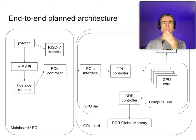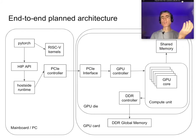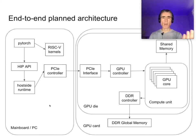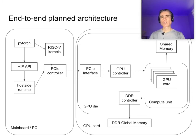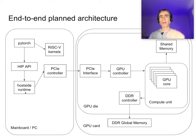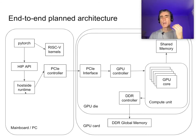Here is the end-to-end planned architecture. The screen is split into two halves. On the left-hand side we've got the main board — the PC, the main host computer. On the right-hand side we've got the GPU card, which comprises DDR global memory and the GPU die itself, which is the ASIC we're taping out. On the left we've got PyTorch, which communicates using a HIP API with our host-side runtime. That runtime handles things like virtual memory, transferring data to and from the GPU, and launching kernels. It communicates through PCIe to the GPU controller on the die.